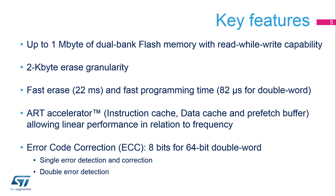The STM32L4's flash memory has several key features. It has up to 1MB of dual-bank flash memory, with a read-while-write capability that can program or erase one bank while executing code from the other bank. The erase granularity, corresponding to the page size, is only 2 kilobytes. A page, bank, or mass erase operation requires only 22 milliseconds, and the programming time is only 82 microseconds for a double word.